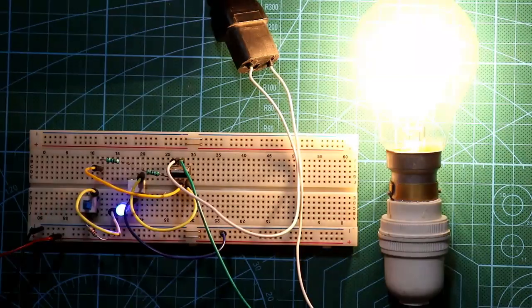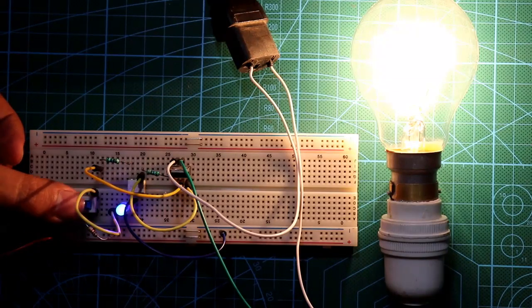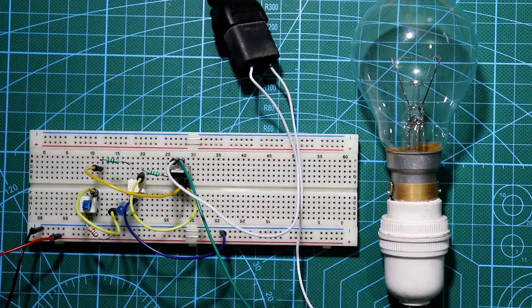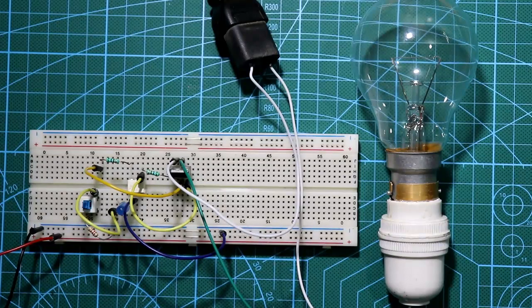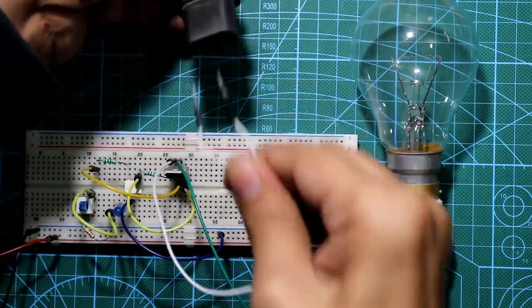So in this way we can isolate from high voltage to low voltage. Instead of this switch we can apply any digital IC or microcontroller and also with 555 IC. Now I'm disconnecting it. In the next video I'll show you how to control brightness of this bulb with 555 timer IC.